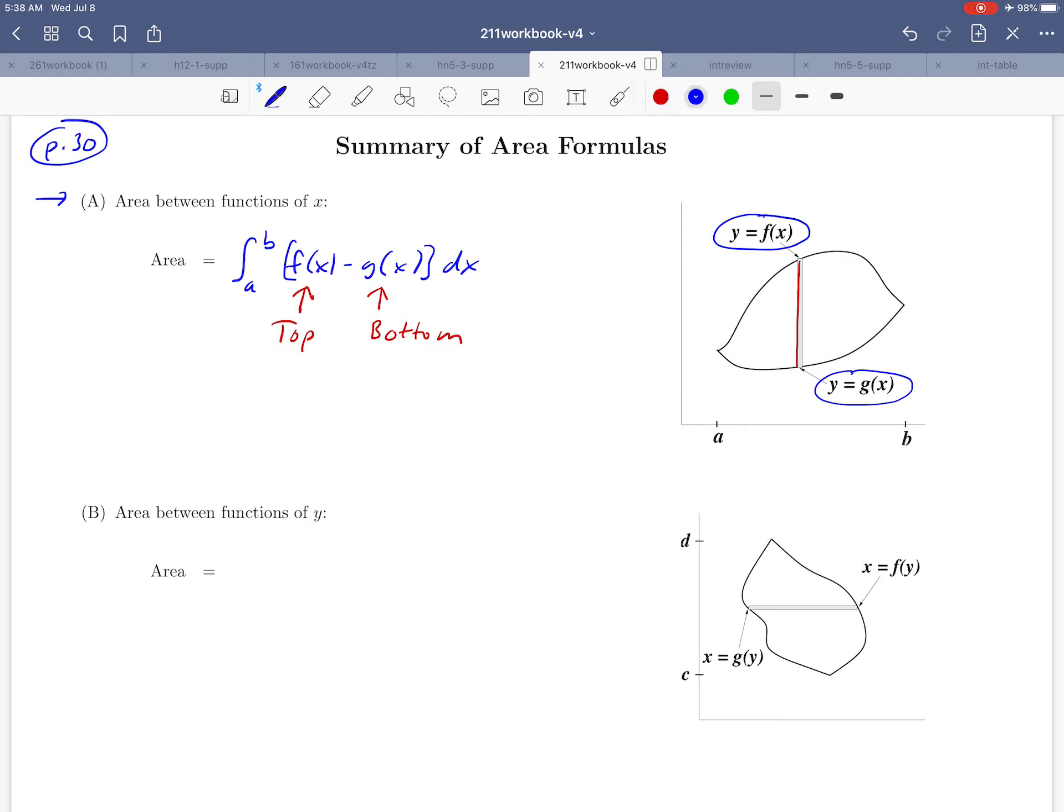Now the other situation that you might be in is a situation where it's easier to solve for x. In this particular case, maybe you've got a curve on the right x equals f of y and a curve on the left x equals g of y. In that situation, you're going to integrate between two y values c and d at the top and the bottom of your region, and you're going to take f of y minus g of y and multiply by dy and then integrate.